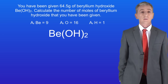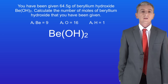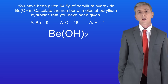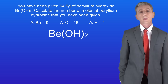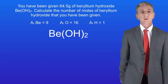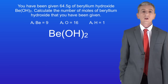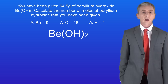Here's one final example for you to try. You've been given 64.5 grams of beryllium hydroxide, which has the formula Be(OH)2. Calculate the number of moles of beryllium hydroxide that you've been given. I've given you the relative atomic masses, so pause the video now and try this for yourself.